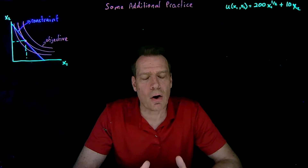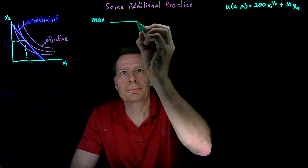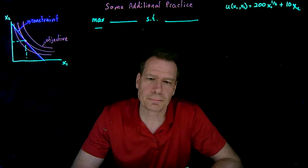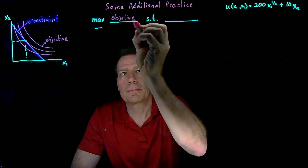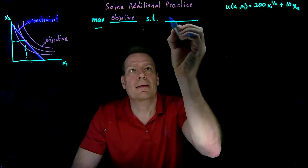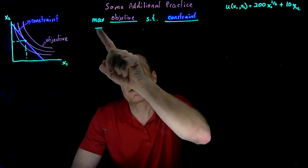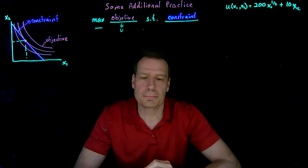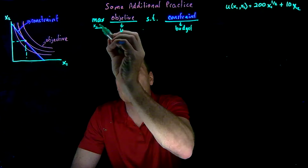Problems like this always have the same general form. We try to maximize something by choosing something, subject to the constraint that we can't just do anything we want. So we're trying to maximize an objective — in this case, utility — subject to a constraint — in this case, the budget constraint. We just need to figure out what it is that we're actually choosing. In our case, the objective is to maximize utility, the constraint is the budget, and the things we're choosing are x1 and x2, the consumption bundle.